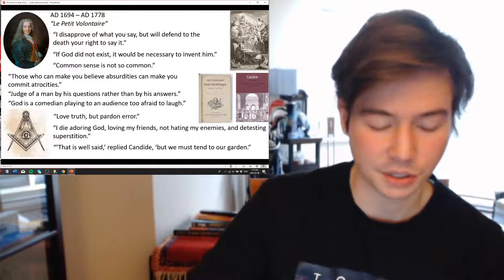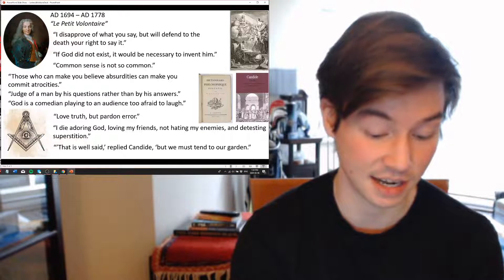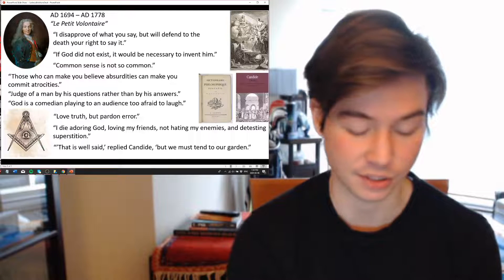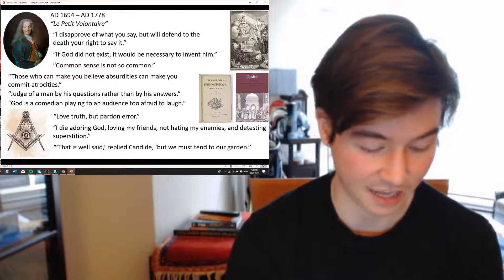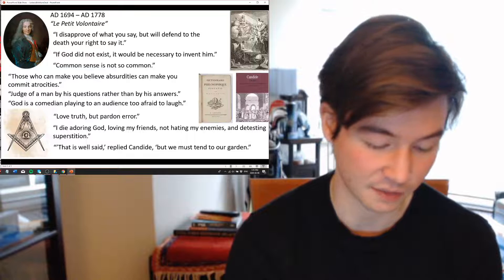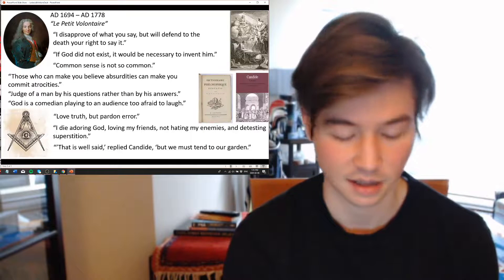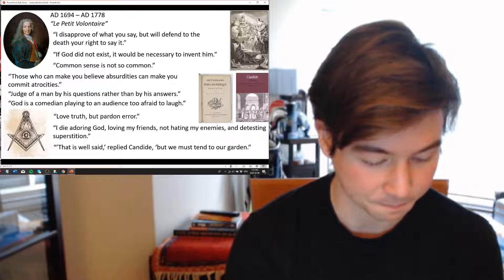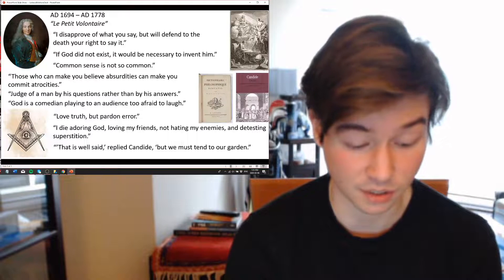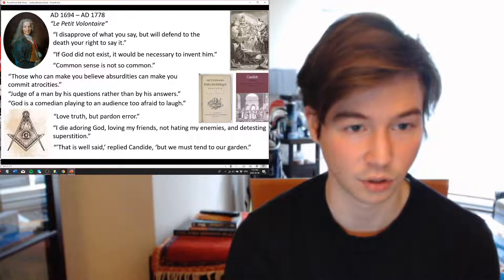At this time he started changing his name. He adopted the name of Voltaire in 1718, soon after his incarceration in Bastille. There's multiple things that it could mean. It could be an anagram of his name, Arouet LI, which is the Latinized spelling of his surname, Arouet and le jeune, which is the young. Or also he was known in his family as le petit volontaire, the little volunteer, the little determined one.